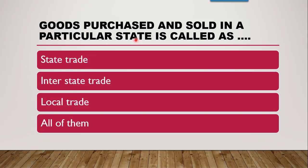The next question is: goods purchased and sold in a particular state is called — state trade, interstate trade, local trade, or all of them. The correct answer is state trade, because goods purchased and sold within a particular state is called state trade. Local trade includes trade within a local region at a particular place, and interstate trade includes trade between two states. So the correct answer is state trade, meaning within that state only.